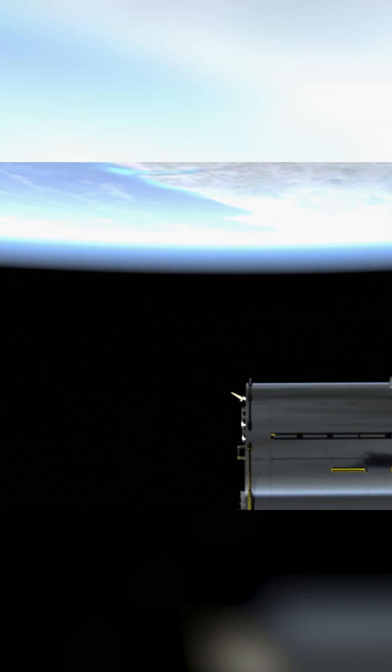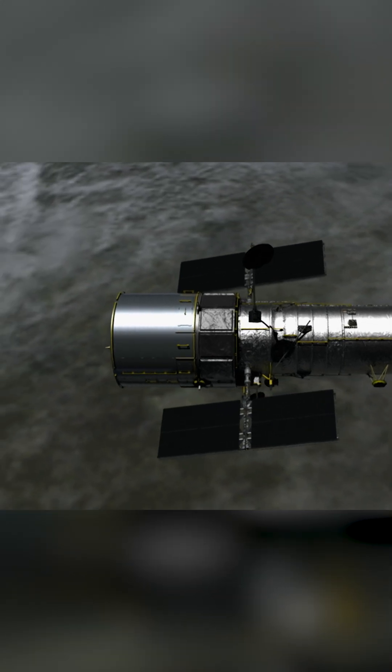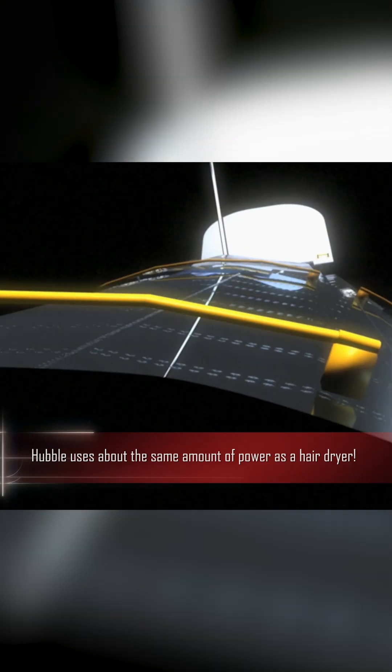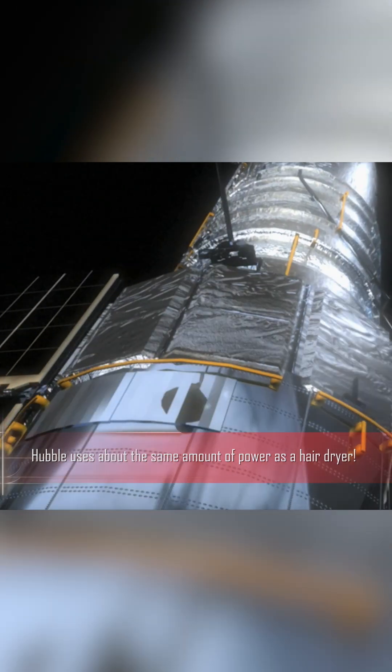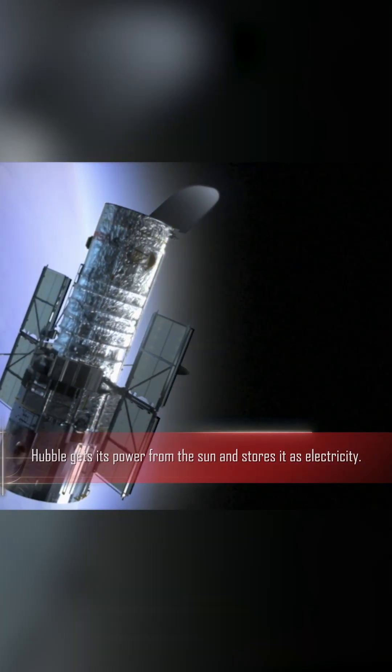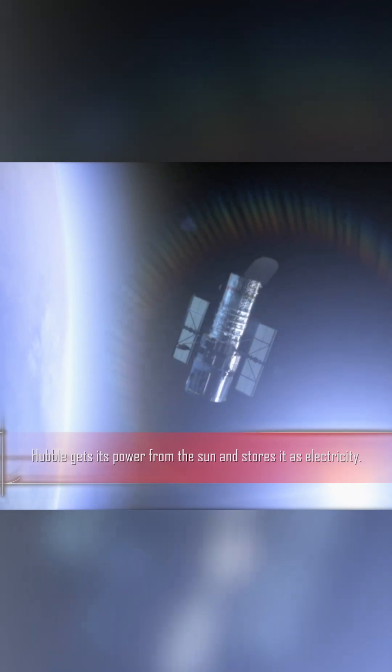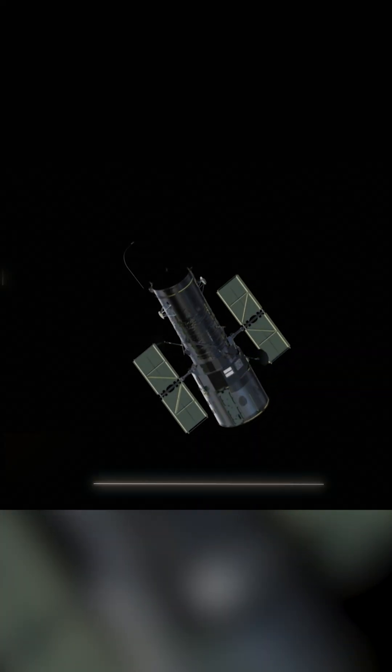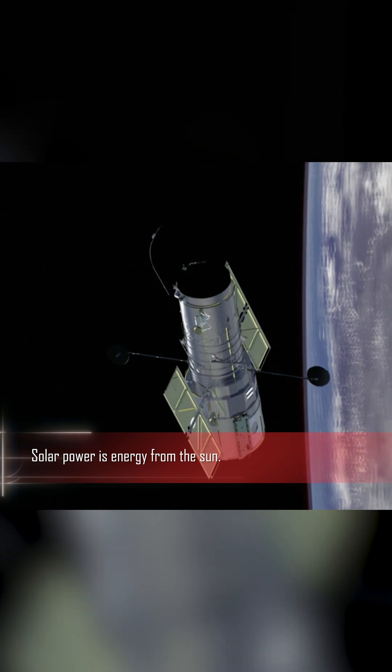But what's most impressive about it is that we put it into space. So in order to do that, it has to use very small amounts of power. NASA fuels Hubble with the largest power source we know, the sun. Two large solar panels capture sunlight to use as solar energy.